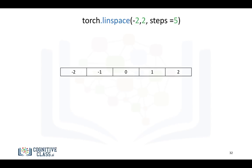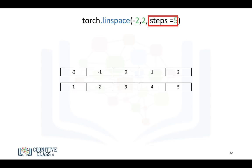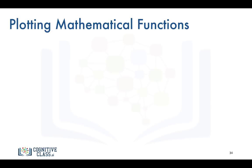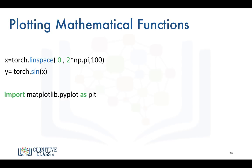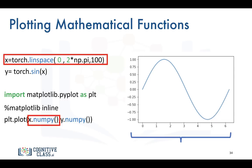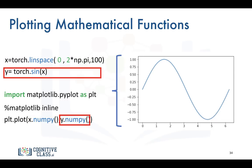Another useful function is linspace. What it does is create a sequence of numbers starting from negative 2 and ending at 2. With 5 samples, the increment between samples is 1. With 9 samples, the increment between samples will be 0.5. Just like NumPy, we can plot mathematical functions — we use linspace, apply the sine function to every element and assign it to tensor y, and use matplotlib. We cast the tensor to a NumPy array using the .numpy() method and plot the result.